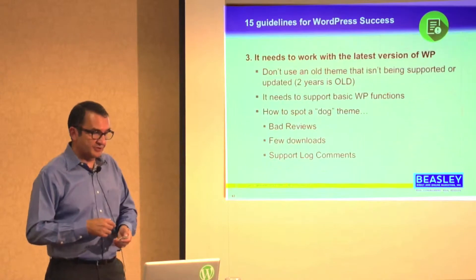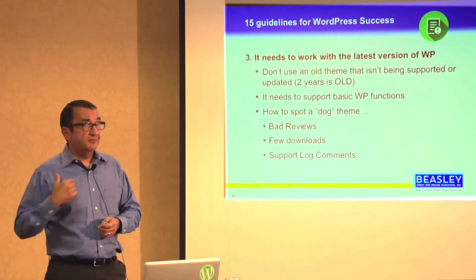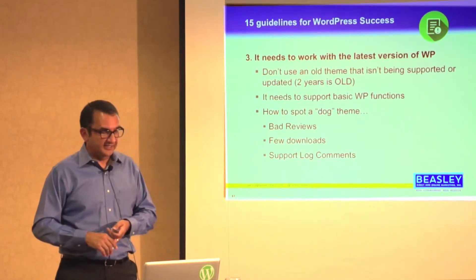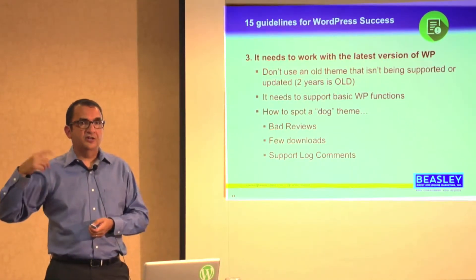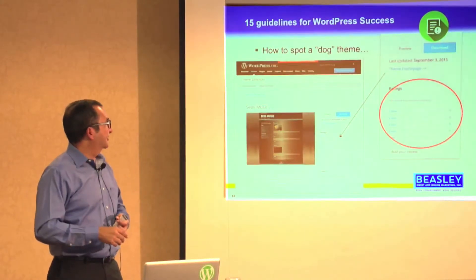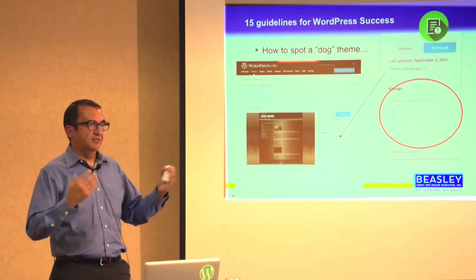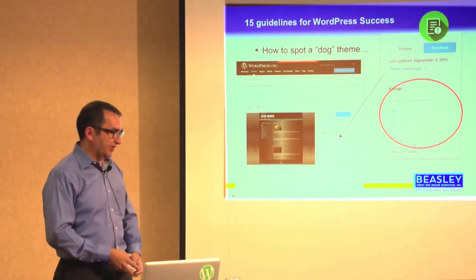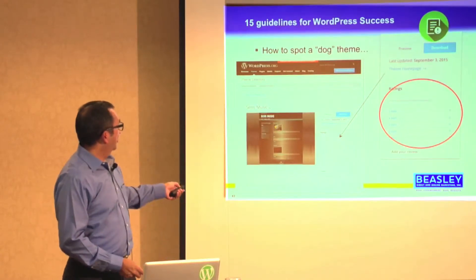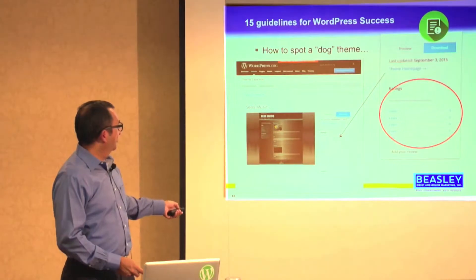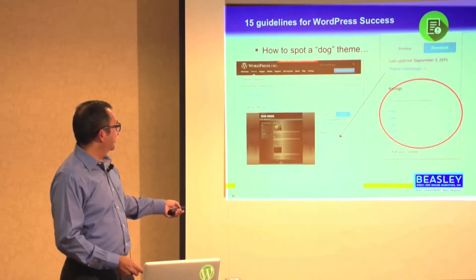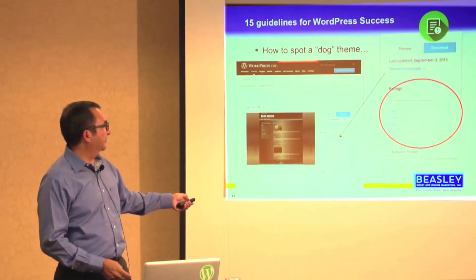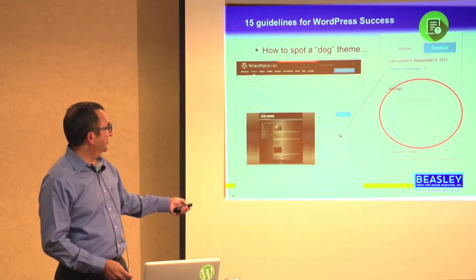So how to spot a dog theme? A dog theme, in my opinion, is one that's going to have bad reviews. You're going to see that it doesn't have a lot of downloads, and there's going to be a support log with comments. You don't want to look through all the support logs, but when you're considering a theme — if you're on the wordpress.org site or any repository you can purchase from — there will be ratings right next to the theme page itself, and you can read all the reviews. It's very much set up like Amazon product reviews.